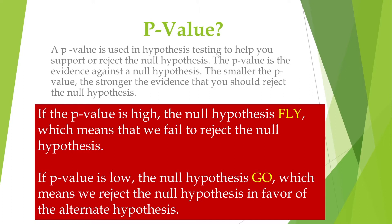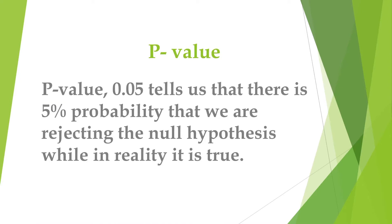Just to remember the p-value, there is a phrase for that. If the p-value is high, the null hypothesis flies — which means that we fail to reject the null hypothesis. If the p-value is low, the null hypothesis goes — which means we reject the null hypothesis in favor of the alternate hypothesis. A p-value of 0.05 tells us that there is a 5% probability that we are rejecting the null hypothesis while in reality it is true.